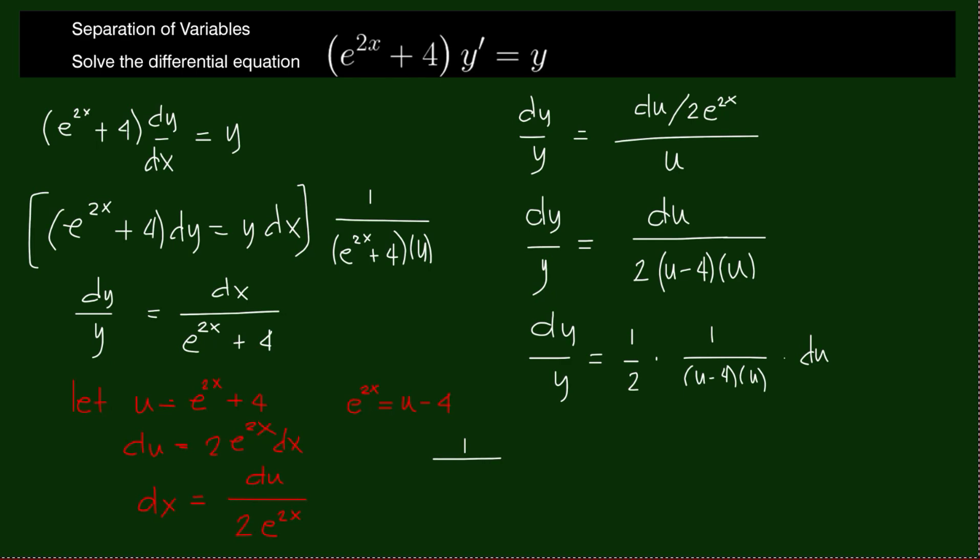We have 1 over u minus 4 over u. Let's say it's equal to two fractions with denominators u minus 4 and u, but we do not know the numerators, so let's just call the numerators a and b.